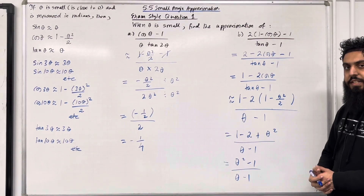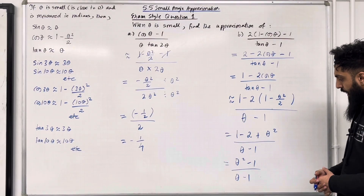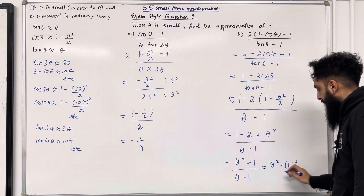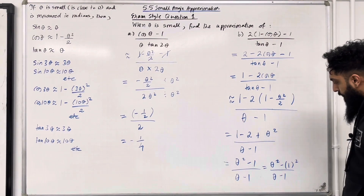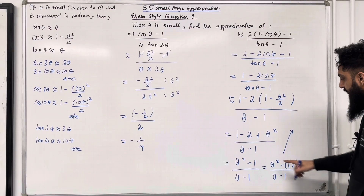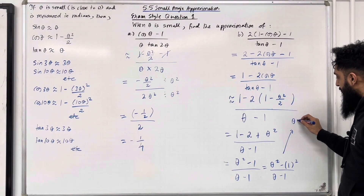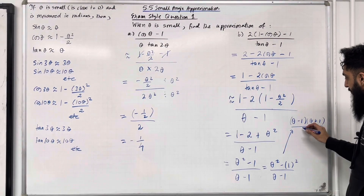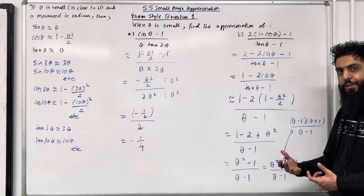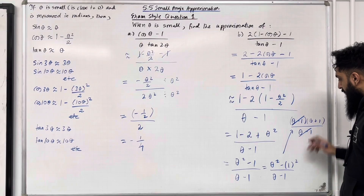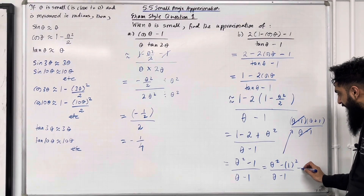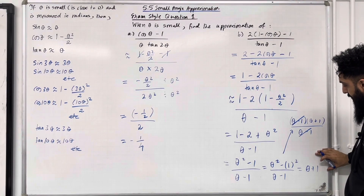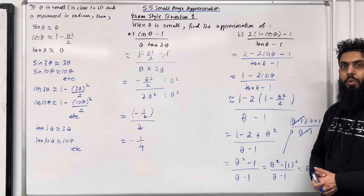We have a difference of two squares in the numerator: θ² minus 1 can be written as (θ - 1)(θ + 1), all over (θ - 1). Cancelling the common factor of (θ - 1), we get θ + 1. So the approximation of this fraction is θ + 1. This completes exam style question 1.